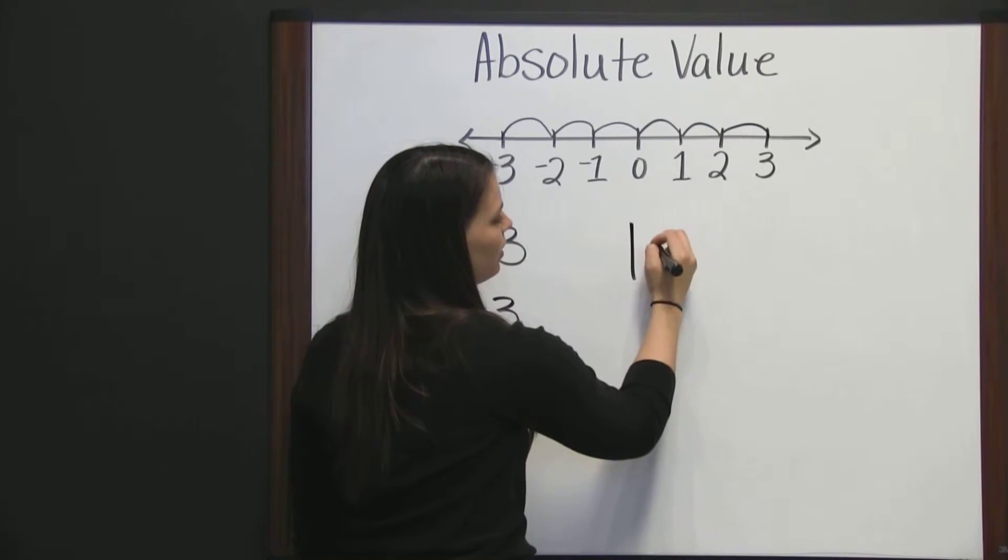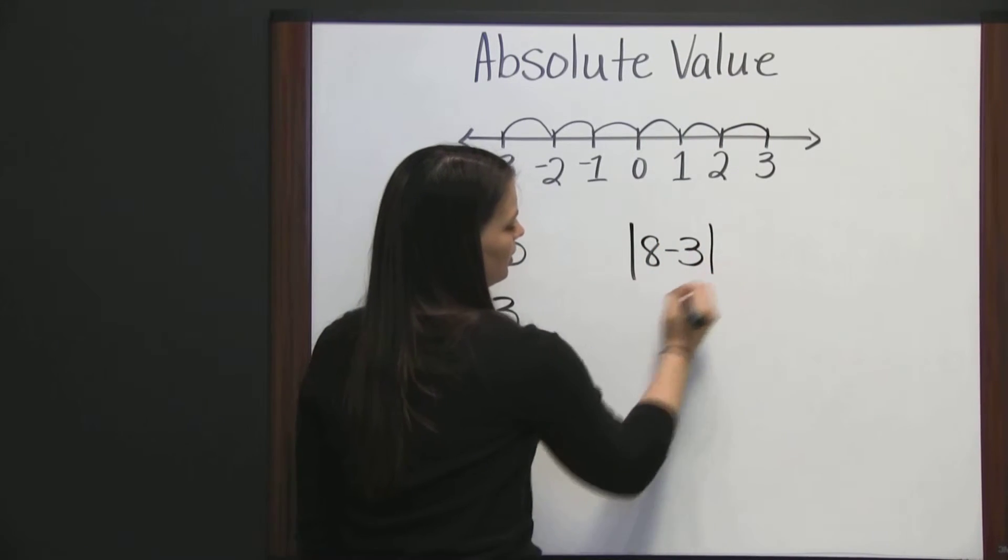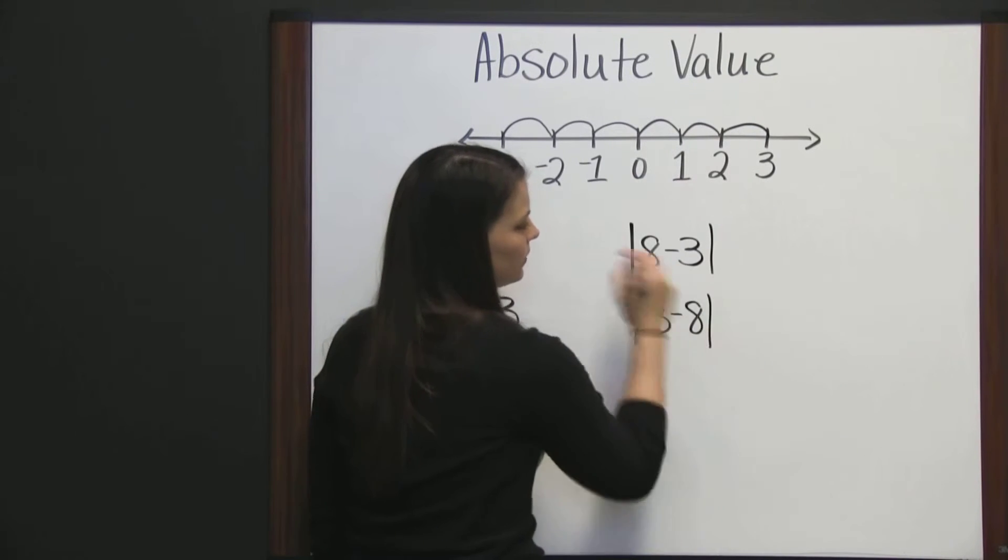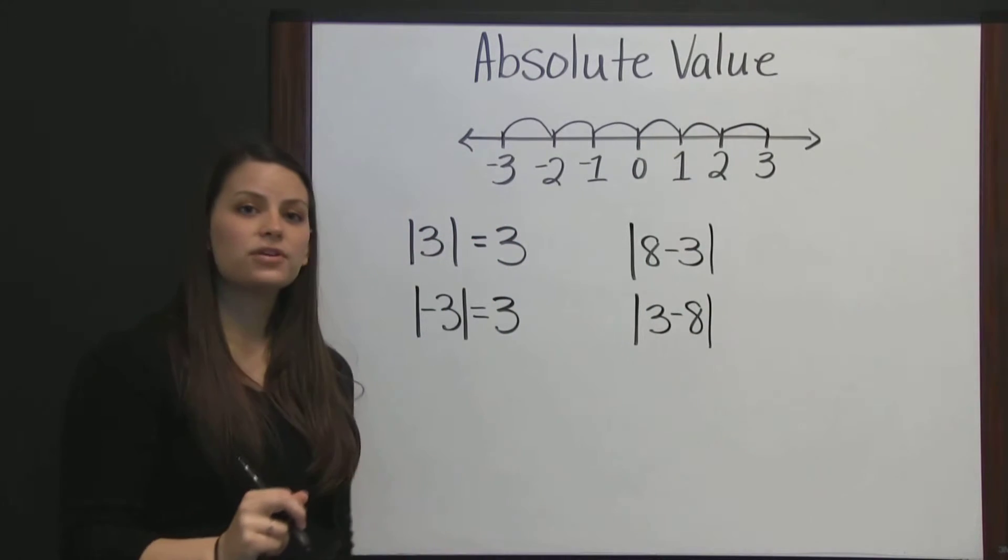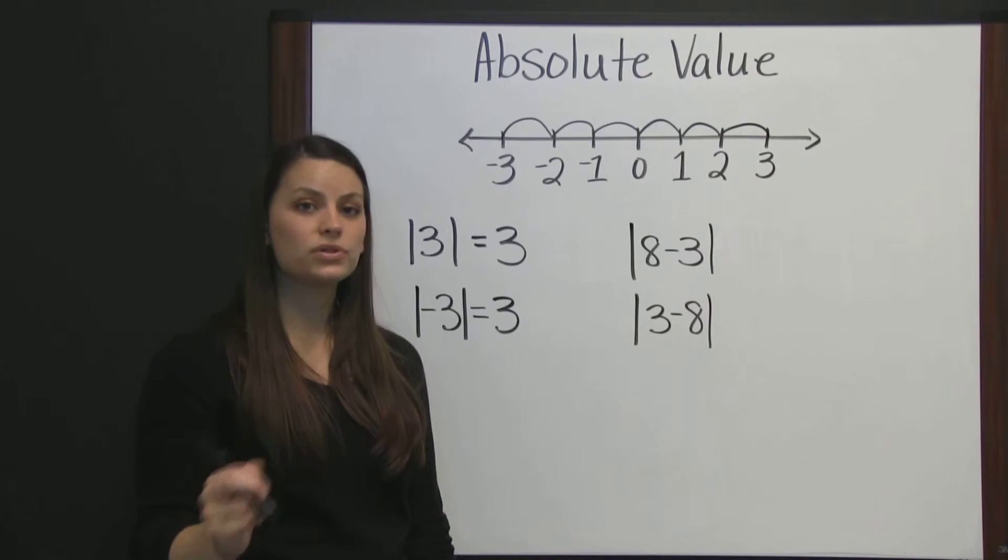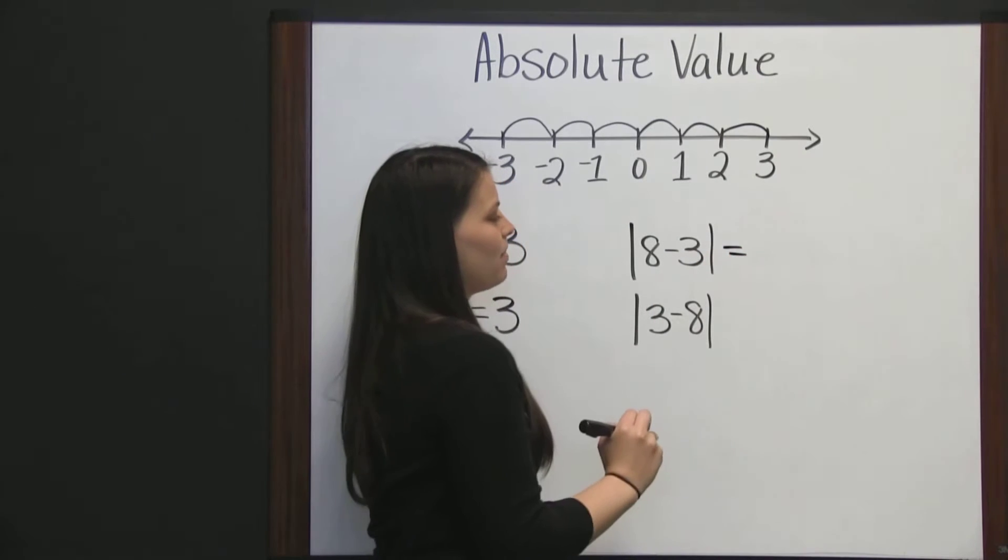The absolute value of eight minus three, and the absolute value of three minus eight. When you're doing the absolute value of a difference, again, the order doesn't matter. The result will still be the same. Let's see how that happens.